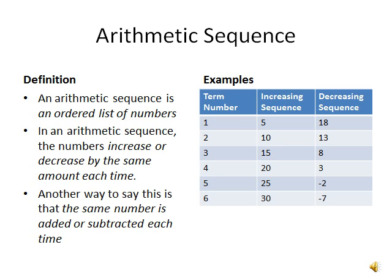In the next sequence, it is decreasing: 18, 13, 8, 3, negative 2, negative 7. In this sequence, we decrease by 5 each time.